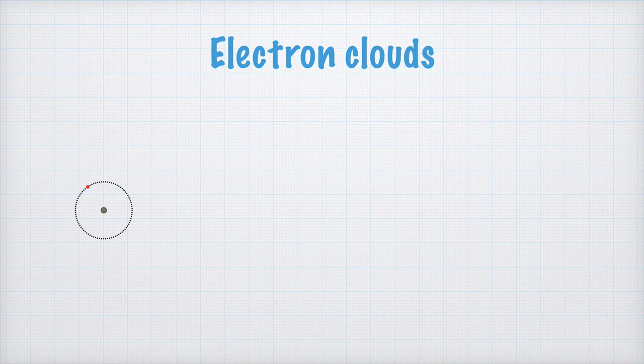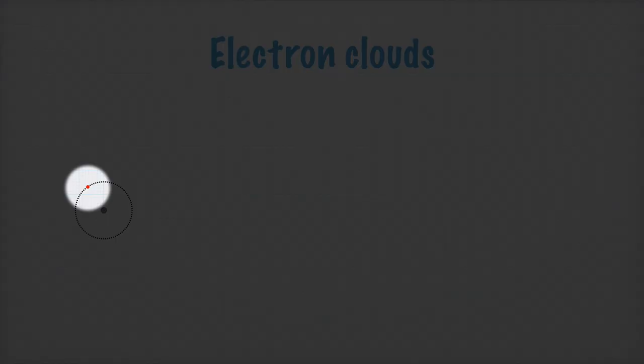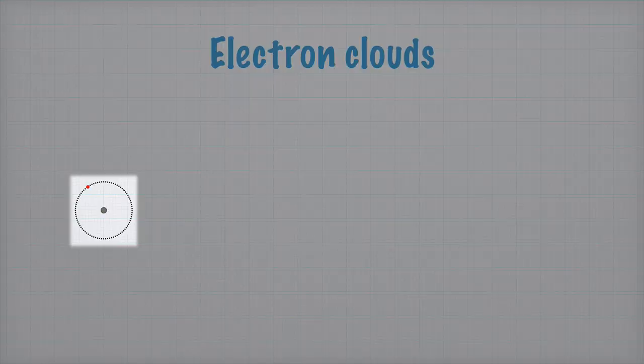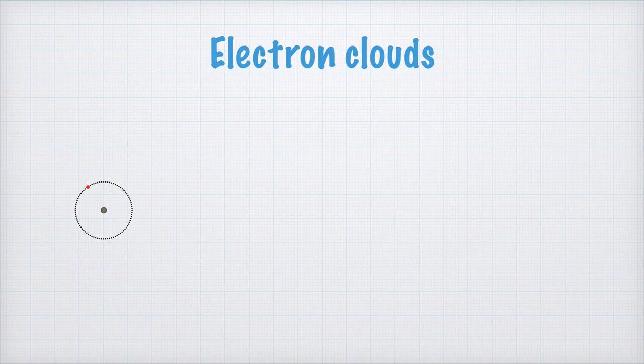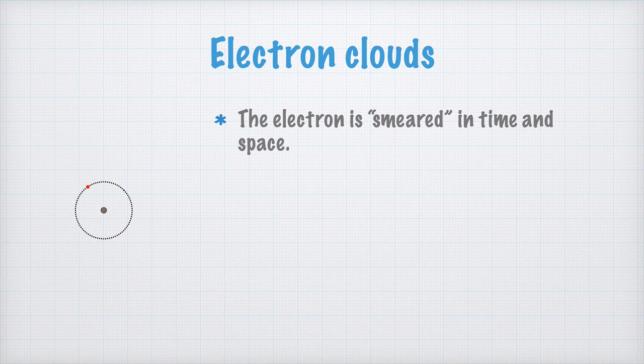But first, we have to consider what an electron is, and what it isn't. It's easy to imagine the electron as a little marble or a little dot that zooms around the nucleus like a planet around the sun. But this is not the case. Rather, the electron is smeared in both time and space.